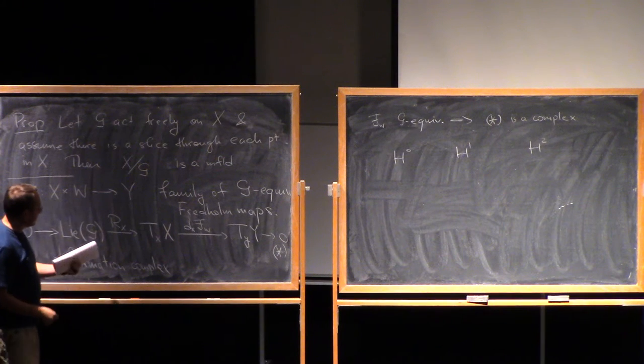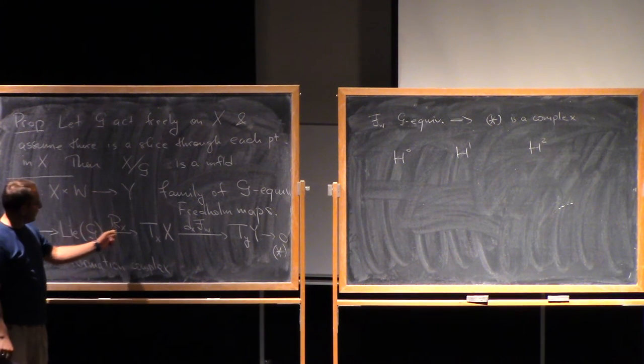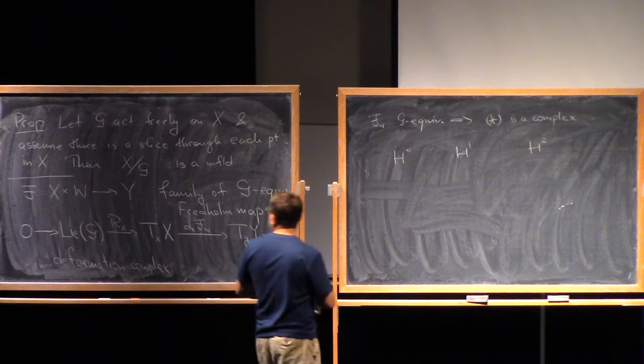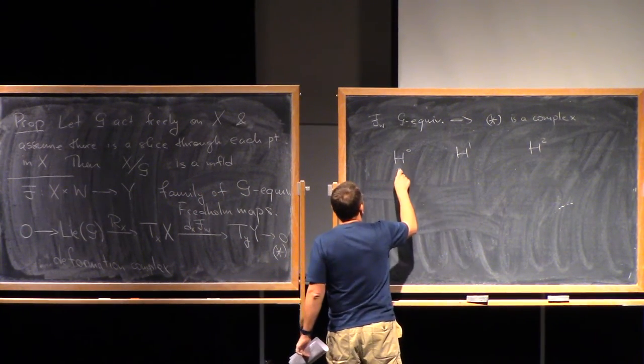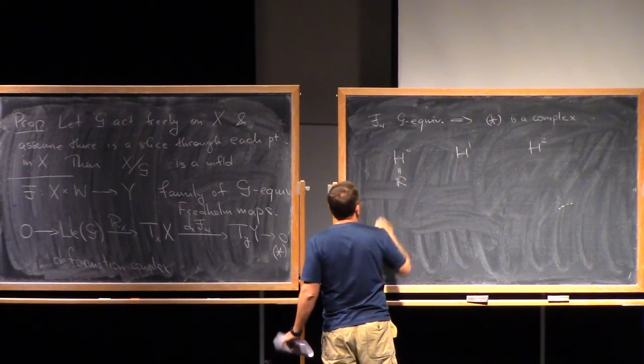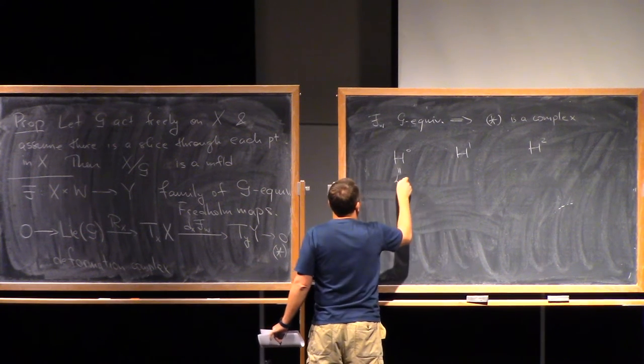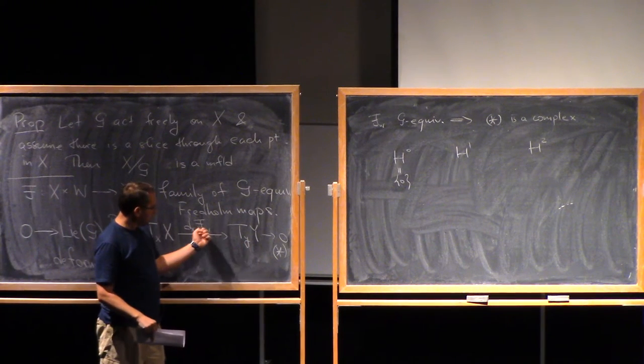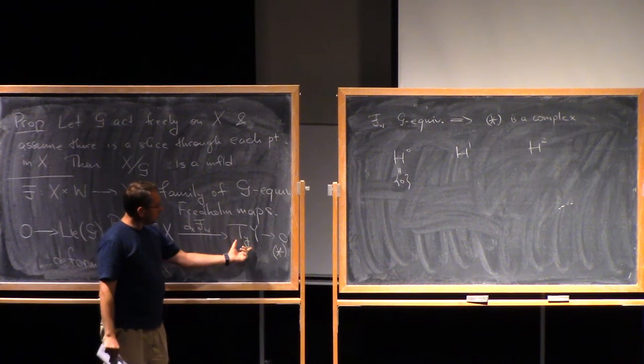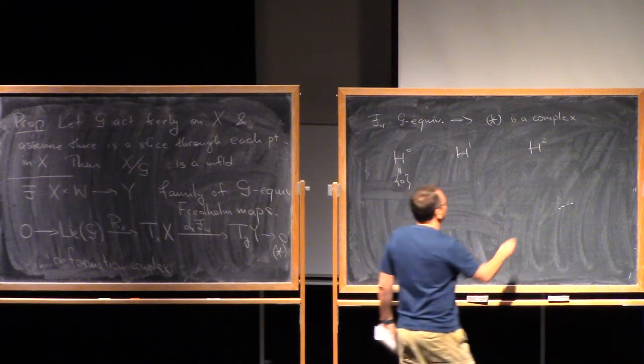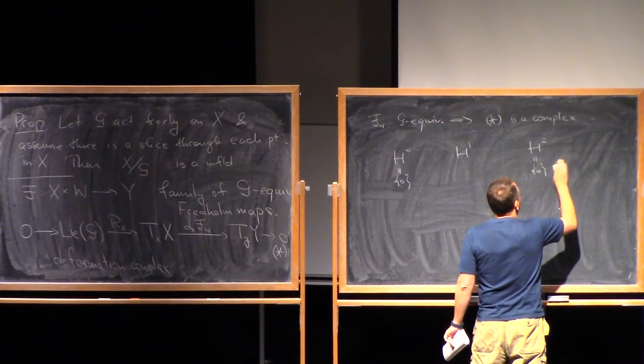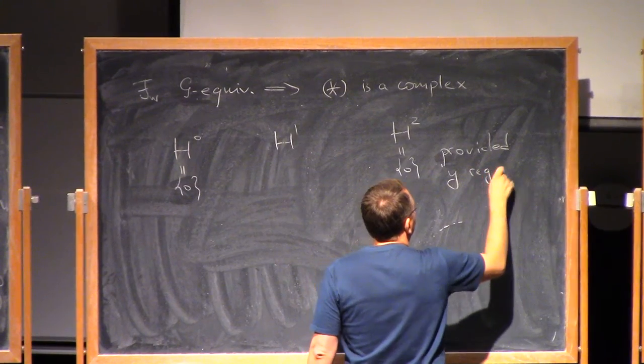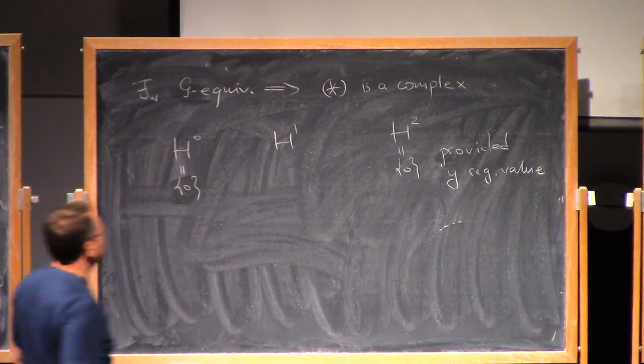Now, since I have assumed that my action is free, so in particular it's locally free, this means that Rx is injective. So in this particular setup, the first cohomology H0 is 0. Now, if Y is a regular value for this map, this means that this map is surjective, and this means that they don't have any cohomology group on this place. So H2 is trivial, provided Y is a regular value.